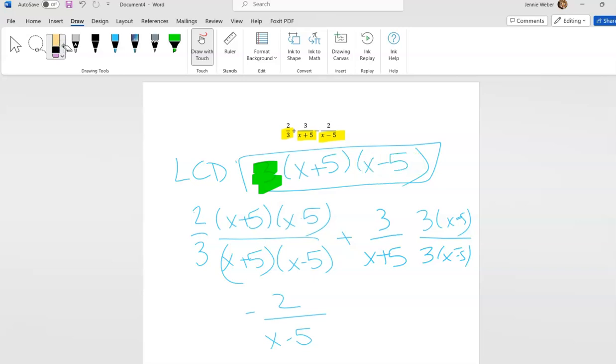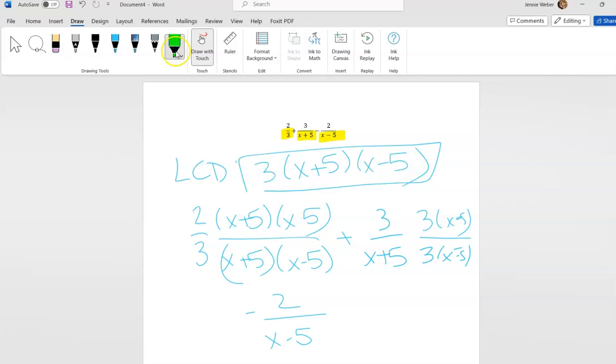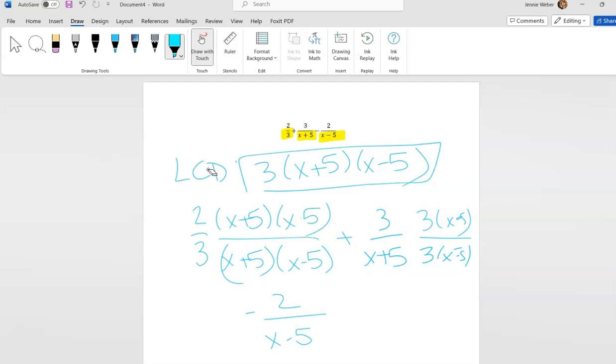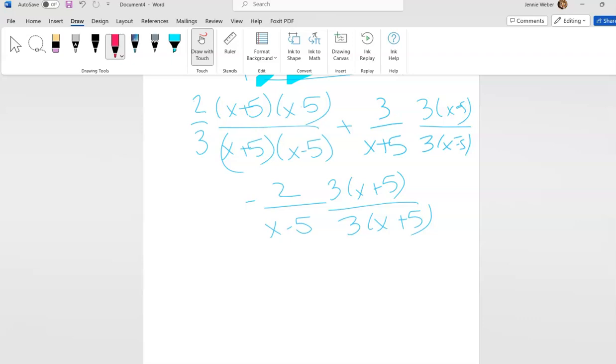This last one, what's this missing? In this case, it's still missing the 3, but this one's missing the x+5. So I'm going to multiply by 3(x+5). Now you could do this one at a time if you wanted; it kind of just depends.